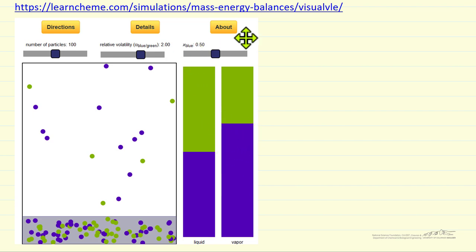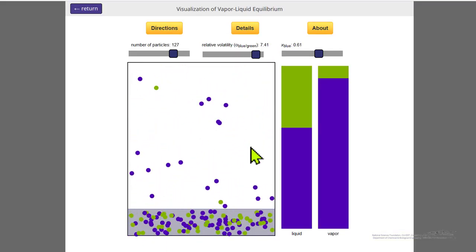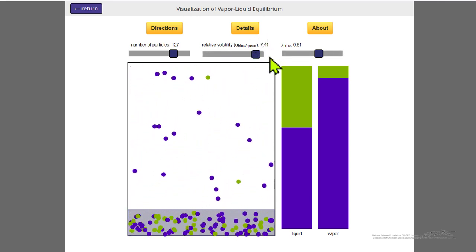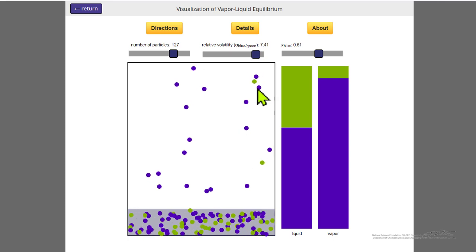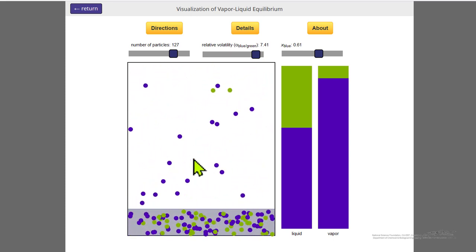So let's look at this simulation. We can see the particles moving around, and you notice that when I have a relative volatility of 7.41 in this case, the vapor phase is almost exclusively the blue molecules.